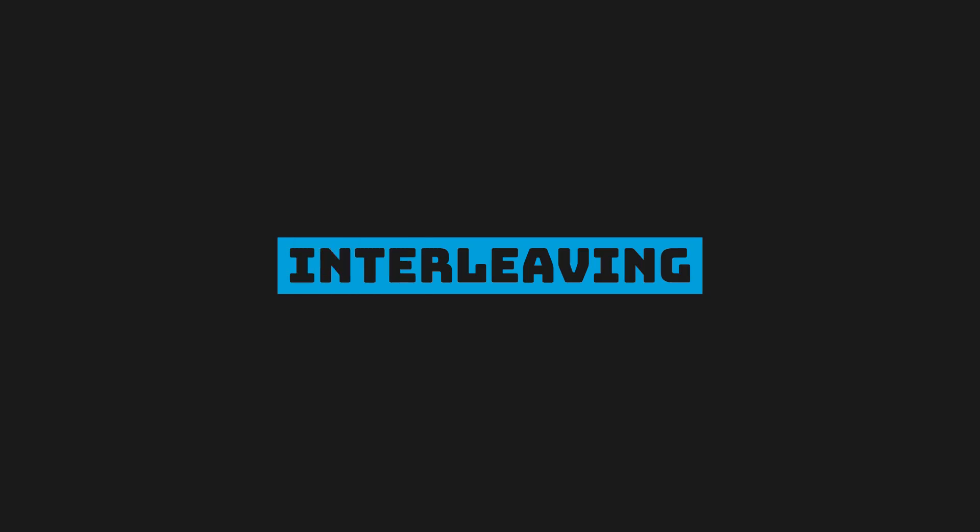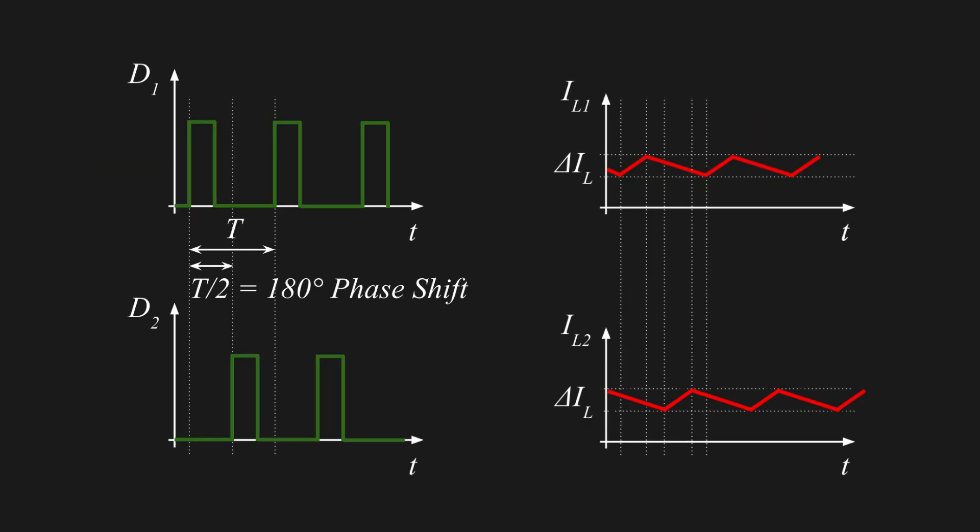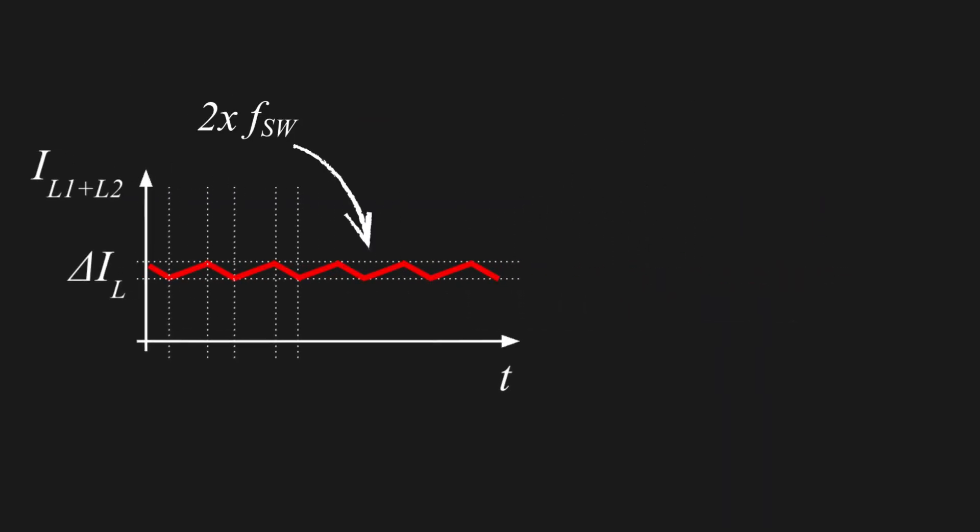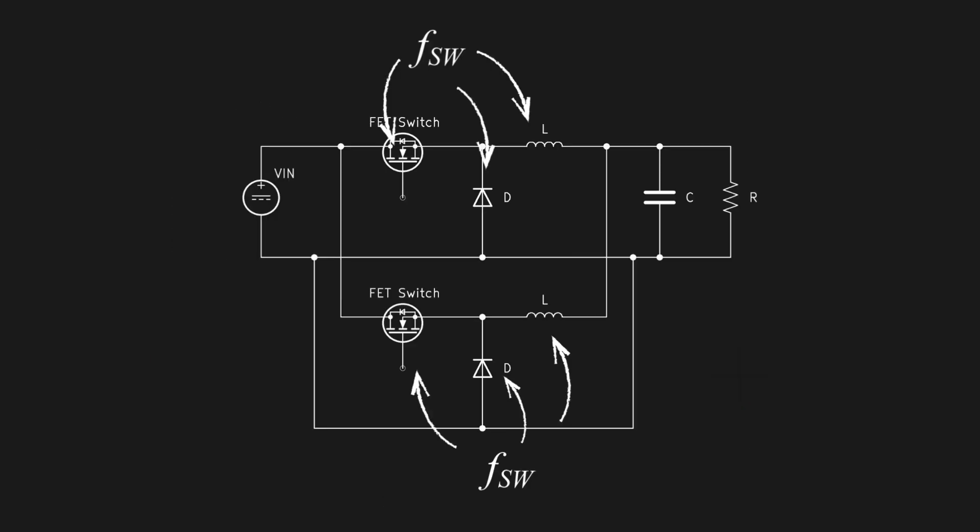In this case, you can use interleaving. This technique consists in using two or more buck converters in parallel, each with half of the power rating and same switching frequency. By switching the converters with a phase shift, the sum of the current ripples will partially cancel each other. This results in current frequencies being multiplied by 2, while their amplitude is reduced to a fraction of the original one. With this, losses due to the switching are kept low, while the requirement on output capacitance are greatly reduced.